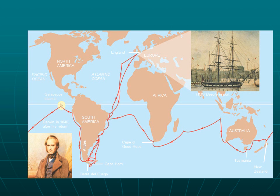The Beagle left from England and made its way down around the bottom tip of South America, over the Galapagos Islands — which are what made Darwin so famous. Then it traveled around Australia, hitting different points and islands around that country, made its way down to South Africa, back to South America, and finally back to Europe. It was a really long, really detailed trip, and this is where Darwin started to get a lot of his ideas and theories.